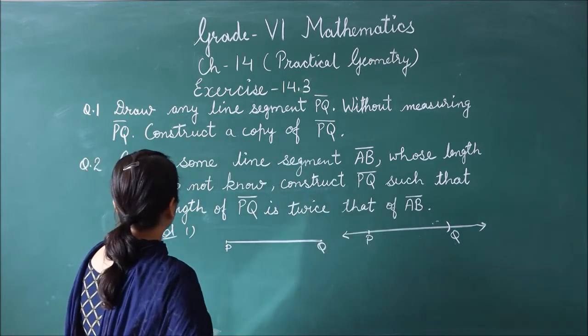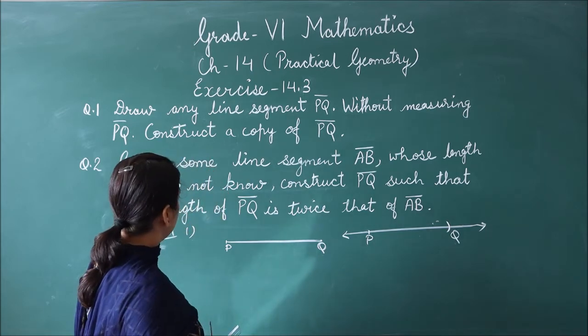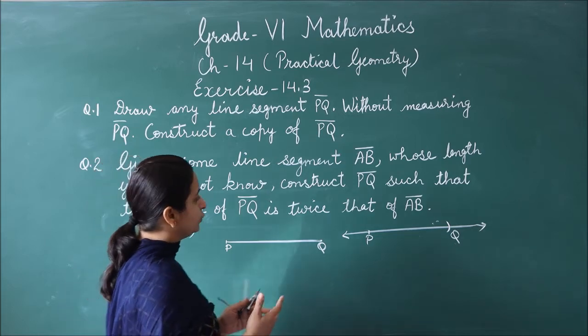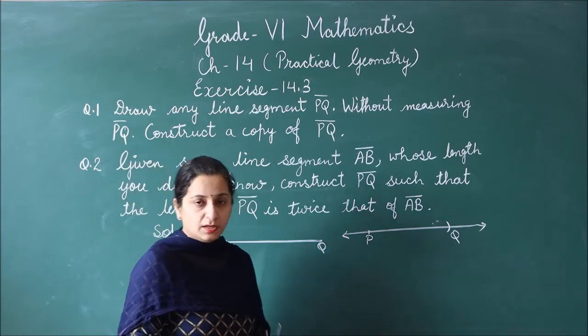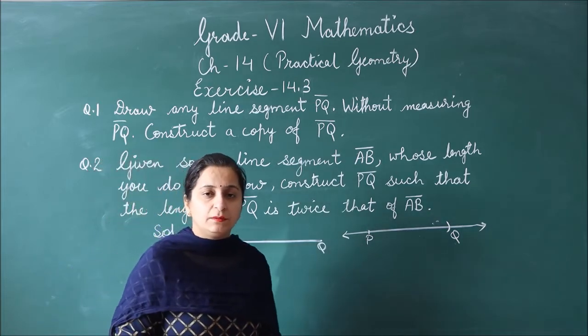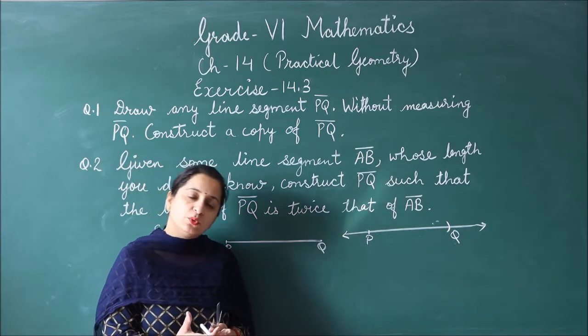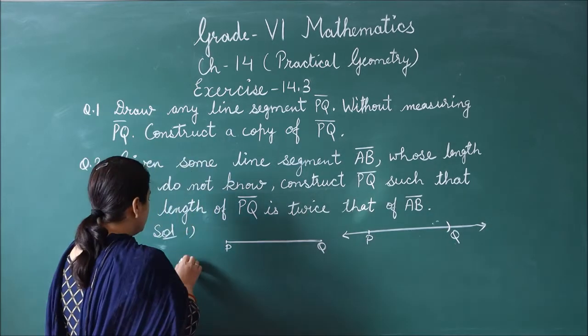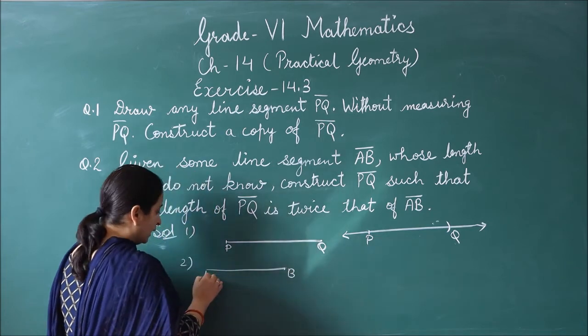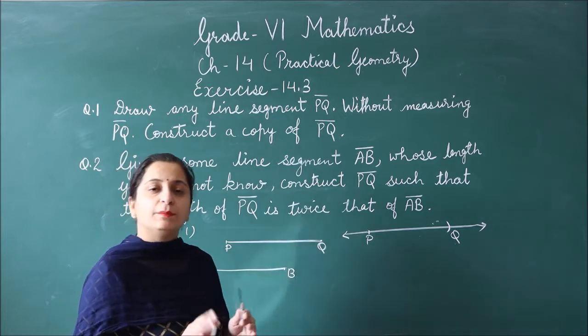Question number 2. Given some line segment AB, whose length you do not know, construct PQ such that the length of PQ is twice that of AB. You have a line segment AB which you don't know the length. You have to make a PQ line which is double AB. Suppose AB is a line segment. We do not know the measurement and we will not measure it.